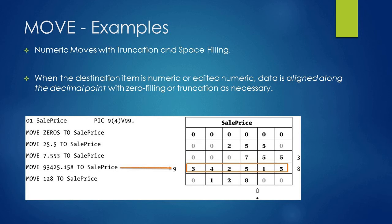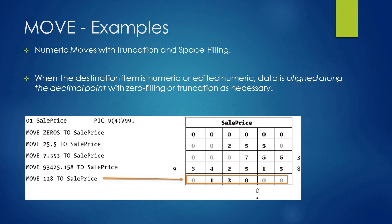Now let's see one more truncation example where the value is larger than the destination item. We are moving 93425.158 to SALE-PRICE. The MOVE statement places 5 on the fourth digit, 2 on the third digit, 4 on the second digit, 3 on the first digit, and 9 is truncated. For the fractional part, 1 is placed on the fifth position, 5 on the sixth position, and 8 is truncated. In another example, moving 128 — which has no decimal — places 8 on the fourth position, 2 on the third, 1 on the second, and the first position is filled with zero. The fifth and sixth positions after the decimal are also filled with zeros.